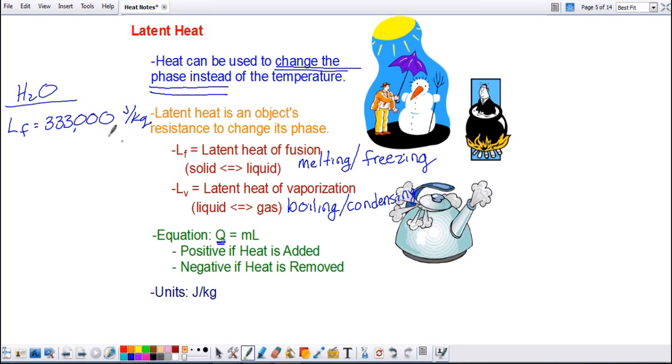And I need to add 333,000 joules for every kilogram that I have. So if I have one kilogram, I need 333,000 joules. Two kilograms, 666,000 joules, and so on and so forth.